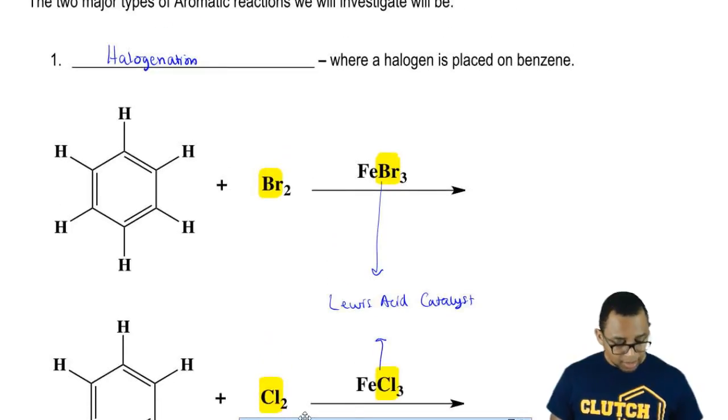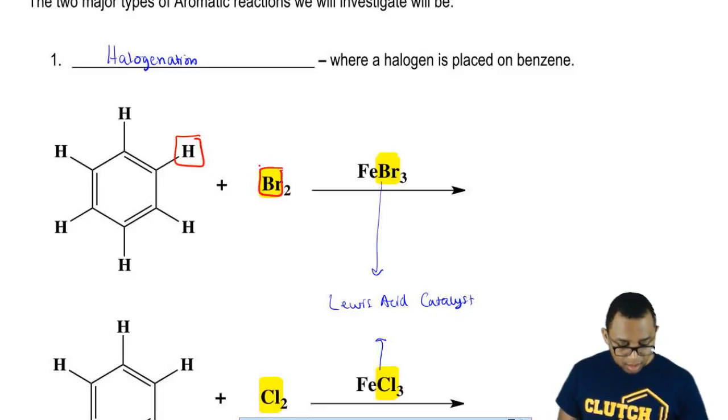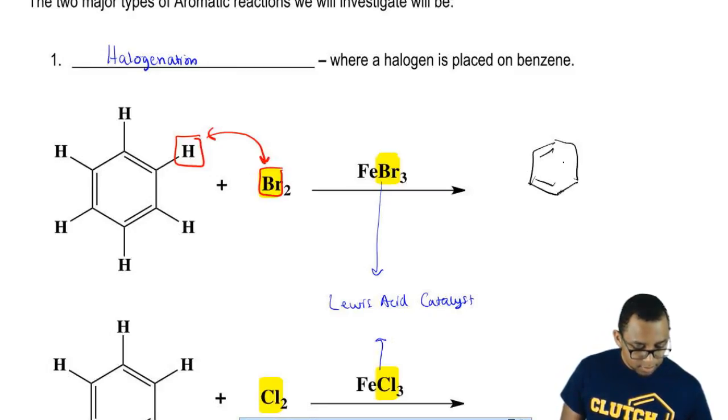In this reaction, all that happens is one of the hydrogens anywhere on benzene switches places with the Br. So we get here. We can draw the double bonds anywhere we want because remember we've talked about that as well, resonance and benzene.